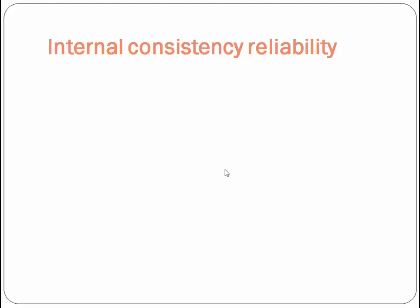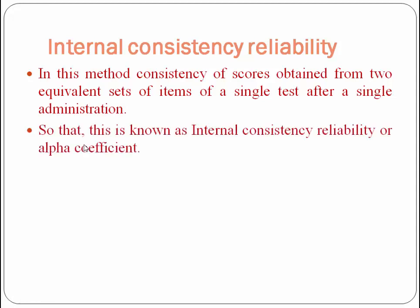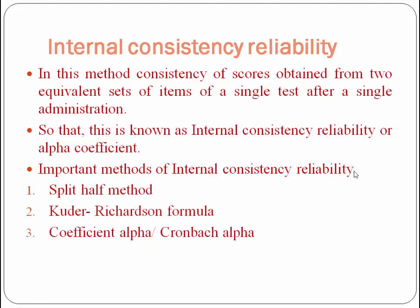The second method is internal consistency reliability. In this method, we assess the consistency of scores obtained from two equivalent sets of items of a single test after a single administration. There are mainly four methods to calculate internal consistency reliability: the split-half method, the Kuder-Richardson formula, the coefficient alpha or Cronbach's alpha, and the Roulon and Flanagan formulas.